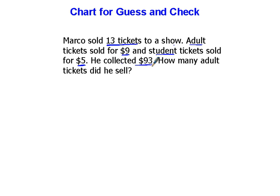So what I want to do is set up two different multiplication problems, one on top of the other. So he sold 13 tickets. We have adult tickets. That's going to be a certain number of adult tickets, and they're going to sell for $9 each. So I'm going to take the adult tickets and multiply it by nine, and that's going to give me a certain amount of money that he made on adult tickets.